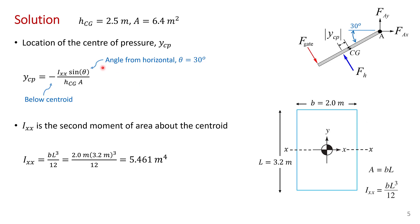So now we can calculate our location for the center of pressure. The center of pressure is minus ixx 5.461 sine 30 which is a half. The depth of the centroid which we previously calculated was 2.5 meters and the area of the gate. And that works out to minus 0.171 meters where the minus indicates that that's a distance below the centroid of the rectangular gate.